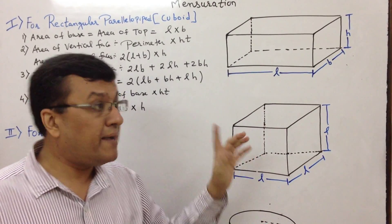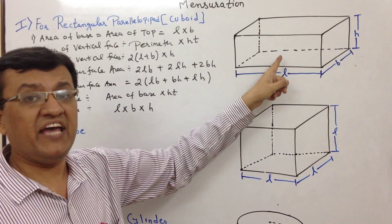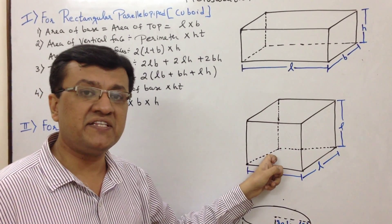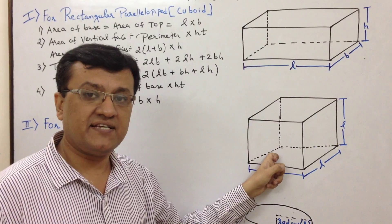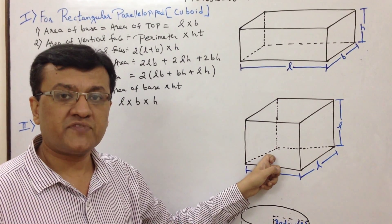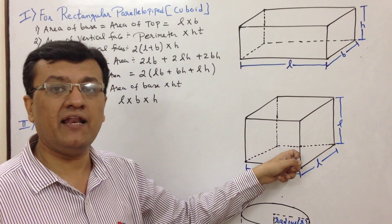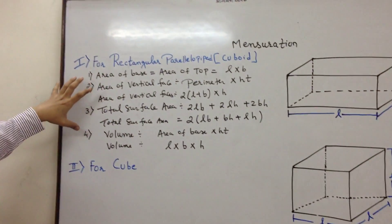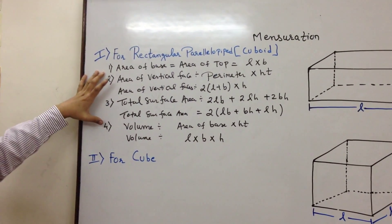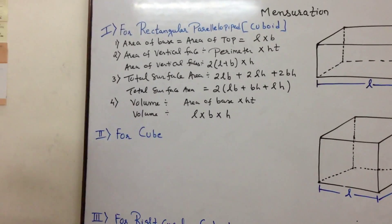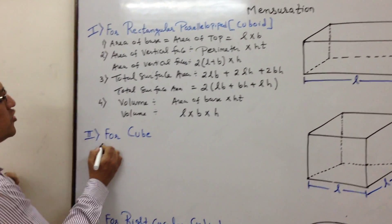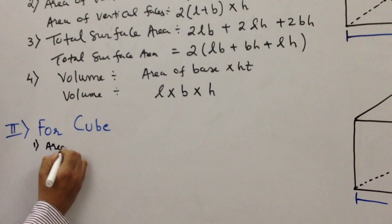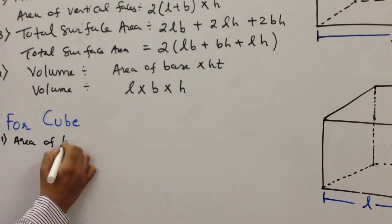The second difference: in a rectangular parallelepiped, there are six faces and every single face was a rectangle. In a cube, there are also six faces, but every single face happens to be a square with dimensions L by L.